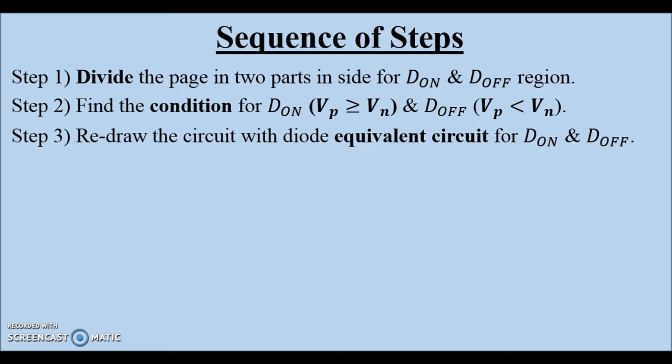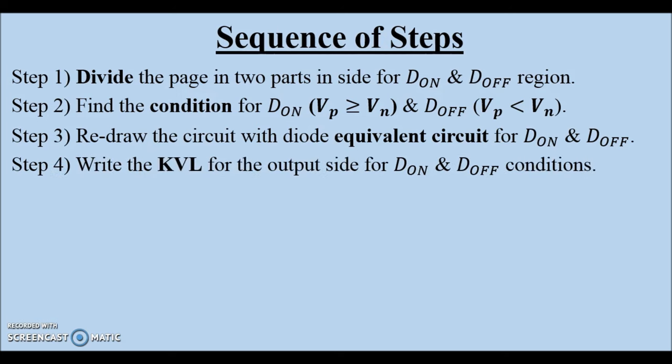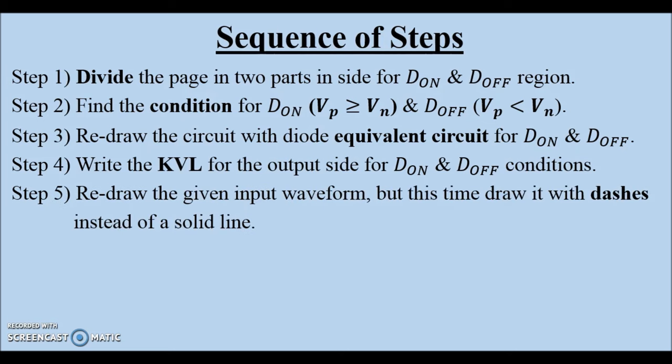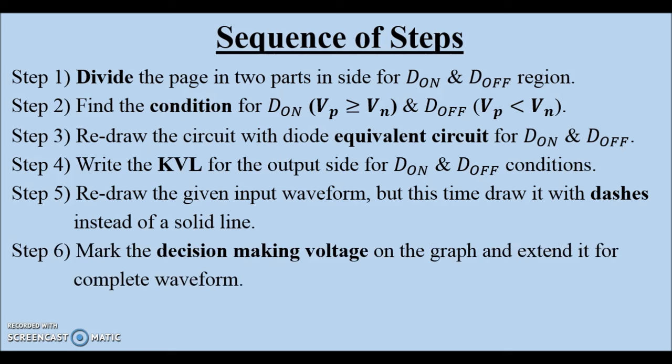Third, redraw the circuit with diode equivalent circuit for dOn and dOff conditions. Fourth, write the output KVL for dOn and dOff circuits. Fifth, redraw the input waveform with dashes instead of a solid line. Sixth, mark the decision-making voltage on the graph.